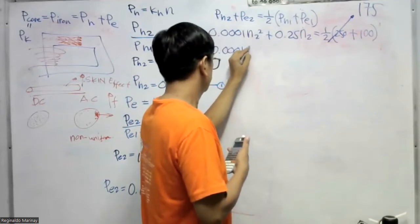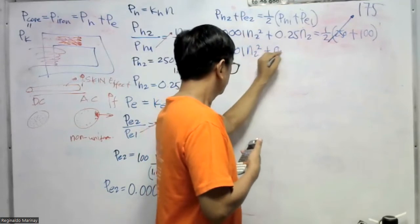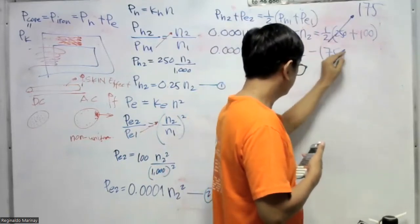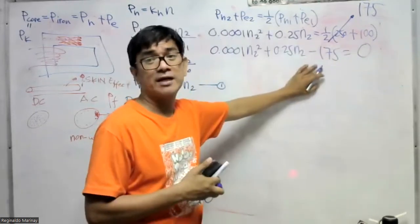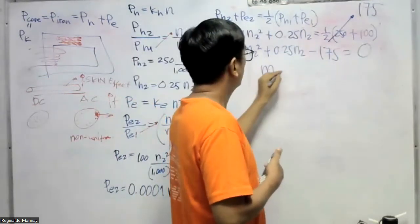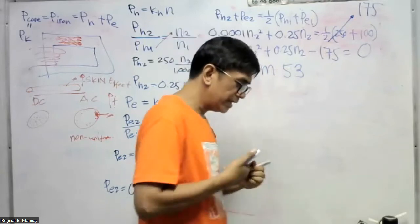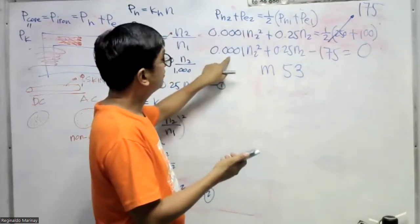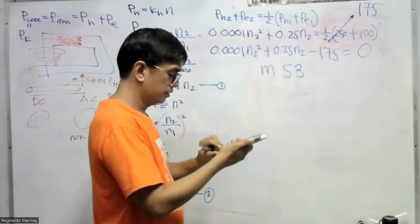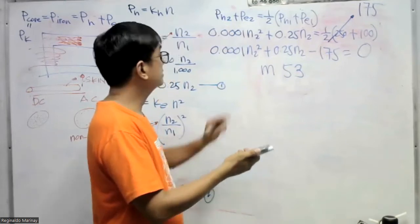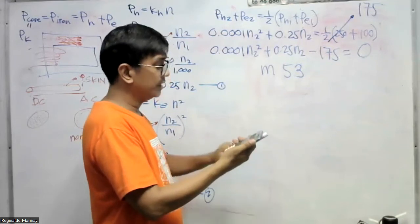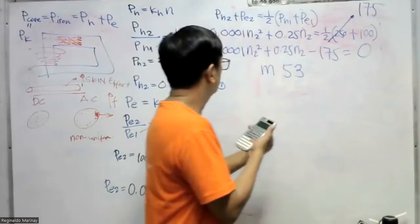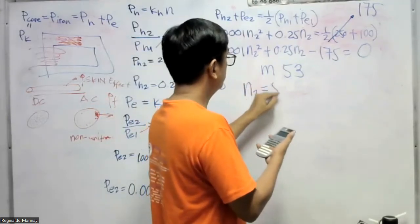We can transpose this to make a quadratic equation: 0.0001 N2 squared plus 0.25 N2, then 175 moved to the other side becomes negative, minus 175 equals 0. When we have this in algebra, that is mode 53 in our calculator. We press mode 53, then input the coefficients. So we have 0.0001 equals, then 0.25 equals, and then negative 175 equals. Then equals again and it will show N2, which is 570.03 RPM.